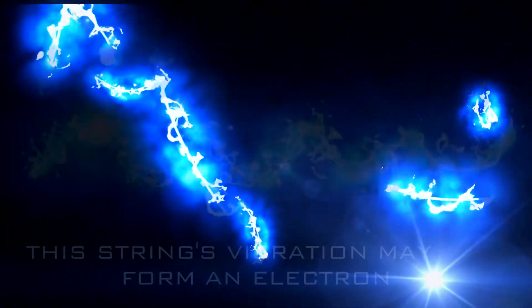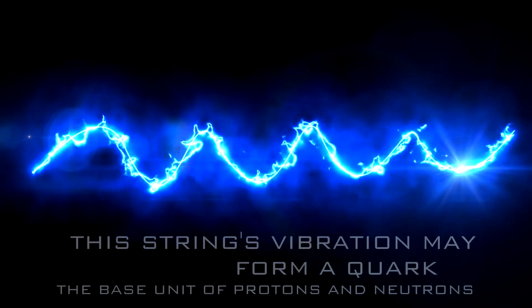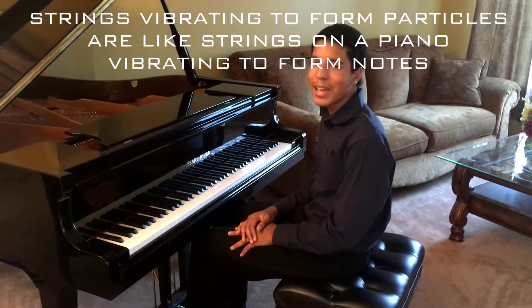Strings make up the elementary particles by vibrating at different frequencies. A string's vibration is what determines the elementary particle. For instance, if a string vibrates at one frequency, it will form an electron, but if it vibrates at another frequency, it forms a quark. This is very much like the strings on a piano.